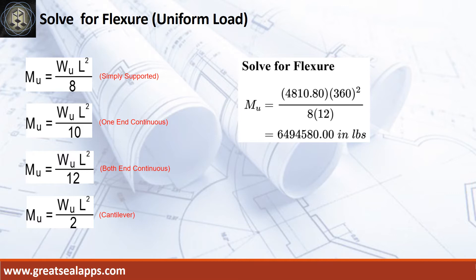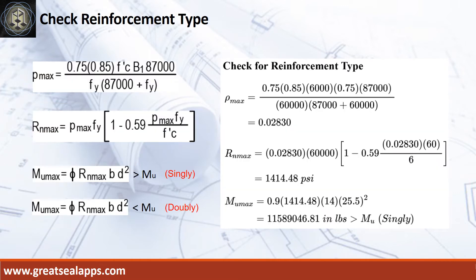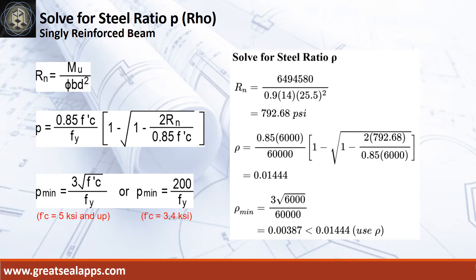Given factored load equals 4,810.8 pounds per foot and L equals 30 feet. The maximum moment is 6,494,580 inch-pounds. The rho max from the given design criteria is 0.0283. Then the maximum concrete beam design ratio Rn max equals 1,414.48 psi. The maximum moment from the given section, MU max, equals 11,589,046.81 inch-pounds, which is greater than the maximum design moment MU of 6,494,580 inch-pounds.